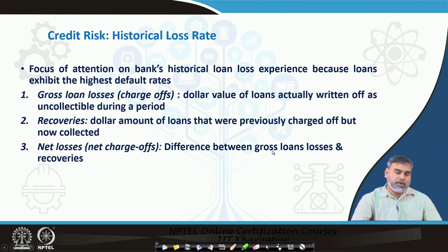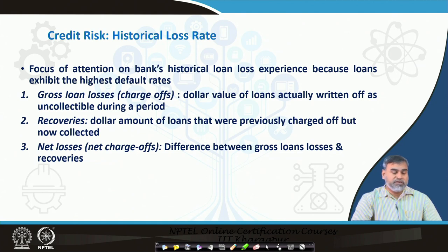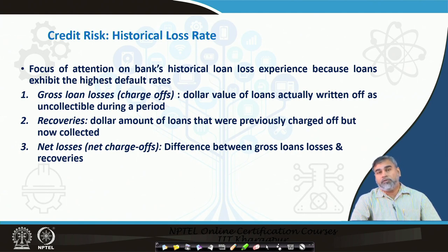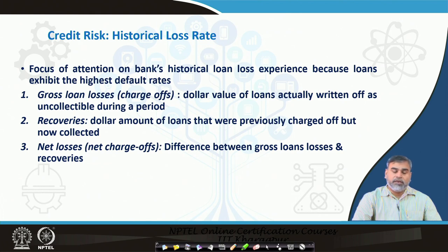The bank always looks at its historical loan loss experience. One component is gross loan losses, also called charge-offs — this is the dollar value of loans actually written off as uncollectable during a period, because some assets can be written off and some cannot. From historical data, banks always try to calculate the default rates, and the first component is gross loan losses or charge-offs.